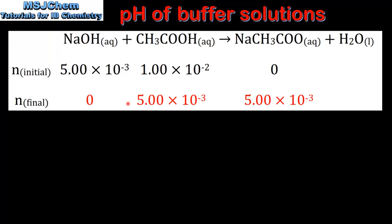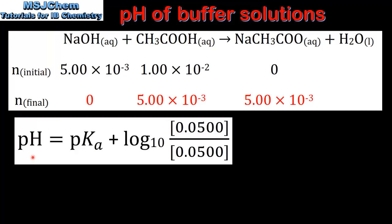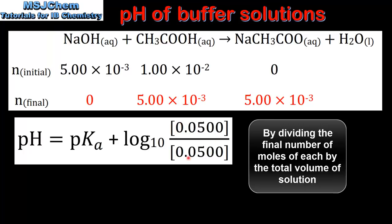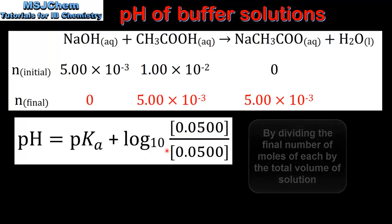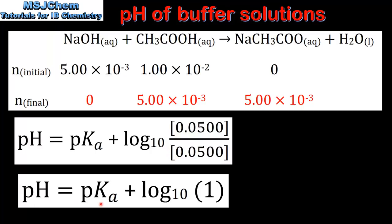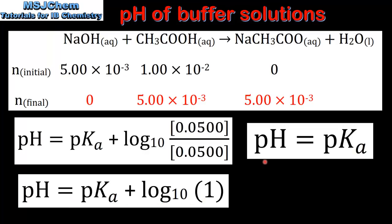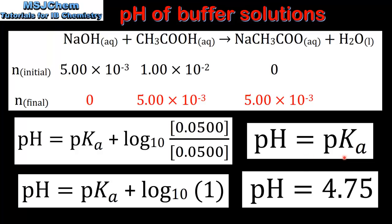We can then calculate the final number of moles of ethanoic acid and sodium ethanoate. We have equal amounts of a weak acid and the salt of a weak acid and a strong base. Using the Henderson-Hasselbalch equation, since the concentration of the salt and the weak acid are equal, this gives pH equal to pKa plus the log of 1. The log of 1 equals 0, therefore the pH equals the pKa. The pKa of ethanoic acid is 4.75, so the pH of the buffer solution is 4.75.